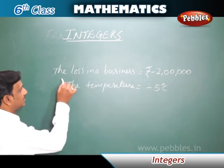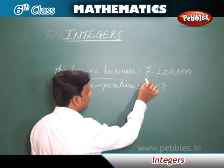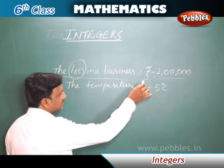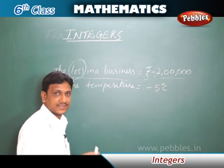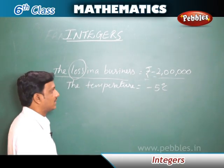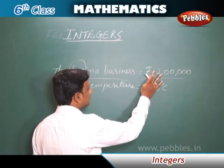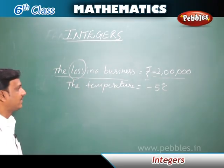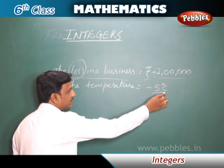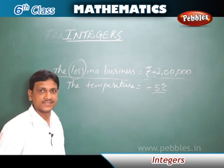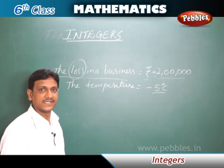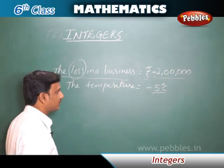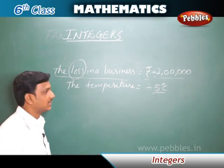Let us see some examples. The loss in a business is minus 2 lakhs. As it is a loss, we are writing it as a negative number. If it is a profit, we don't write the minus symbol. So, as it is a loss, we write it as minus 2 lakhs. In the same way, the temperature is minus 5 degrees. We write minus 5 degrees when it is very cold, below zero. So, we use the minus sign to indicate that low temperature — minus 5 degrees Celsius.